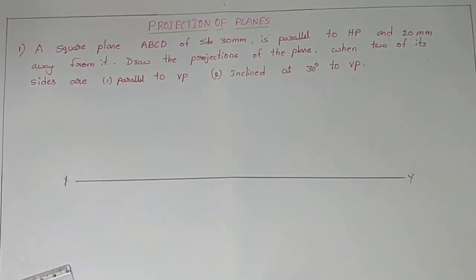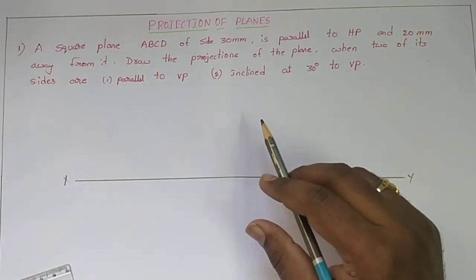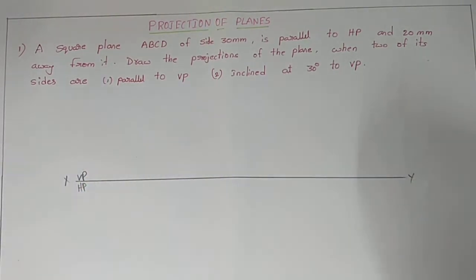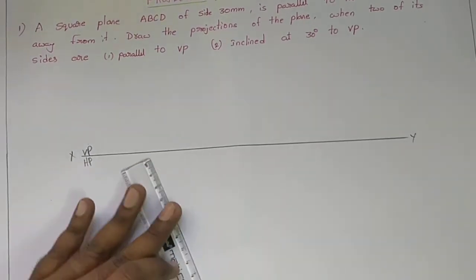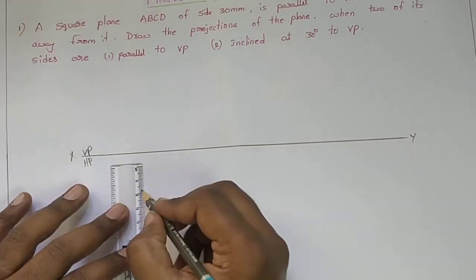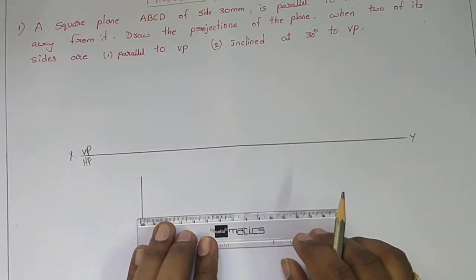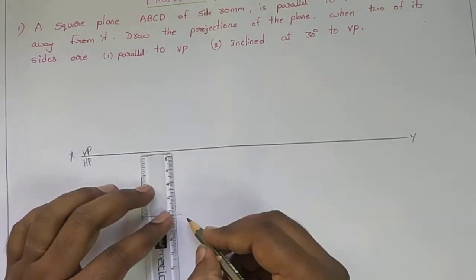I draw the reference line and name it XY. Above HP and in front of VP, it is in the first quadrant. That means above the reference line is the vertical plane and below the reference line is the horizontal plane. Since the plane is parallel to HP, viewing from the top gives a square plane with 30 mm sides. We need to draw the 30 mm square plane where the angle between two sides is 90 degrees.